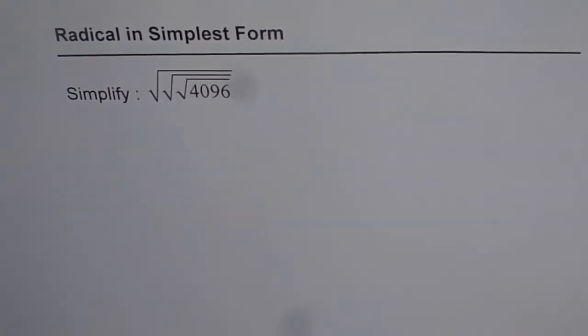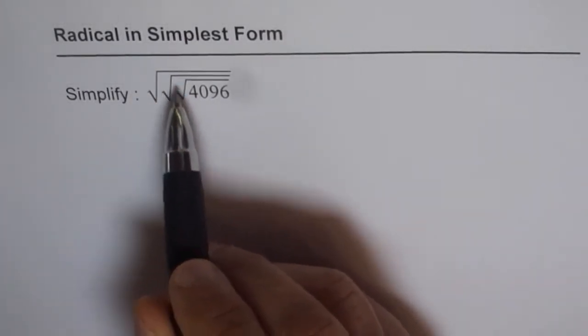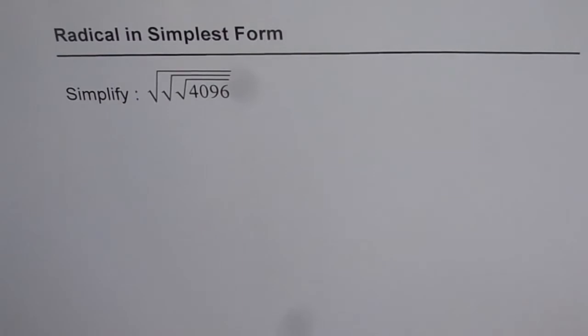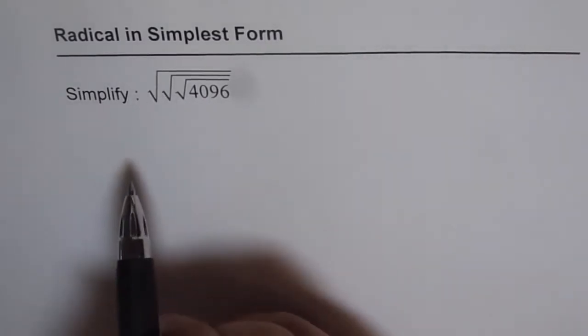Radical in simplest form. Here we have a very scary function which is square root of square root of square root of 4096. Now how to solve this? So what we should do is we should start from inside out.